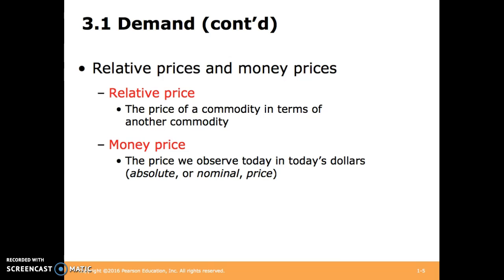Relative Prices and Money Prices. Relative Price is the price of a commodity in terms of another commodity. For instance, how many apples could I buy for the price of one steak? Money Price is the price we observe today in today's dollars — this is just how much something actually costs, like how many dollars it costs to buy a steak.